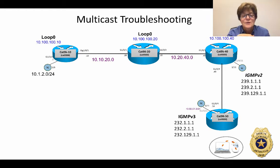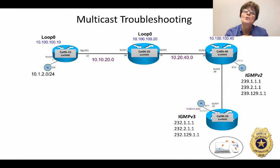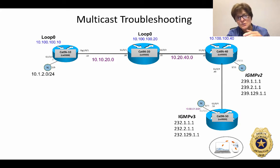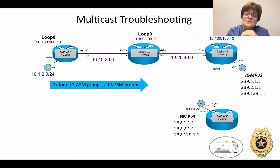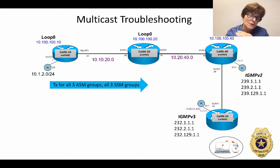Fact number two: there is a Spirent Test Center port acting as a host off of CAT 9K 50 that is sending IGMP version 3 requests for source-specific multicasts — properly formed SSM IGMPv3s with the proper source — trying to join 232.1.1.1, 232.2.1.1, and 232.129.1.1. Another fact: the subnet 10.1.2.0 is the multicast source for all three ASM groups (the 239s) and all three SSM groups (the 232s).